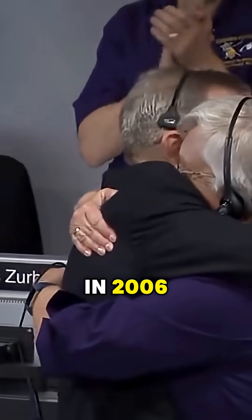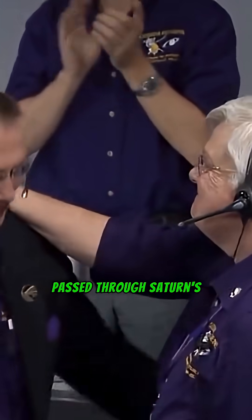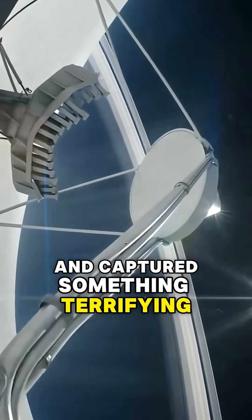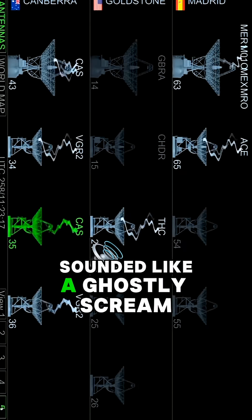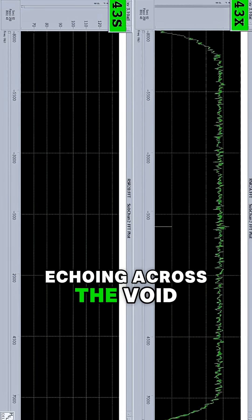In 2006, NASA's Cassini spacecraft passed through Saturn's rings and captured something terrifying — eerie radio signals turned into audio that sounded like a ghostly scream echoing across the void.